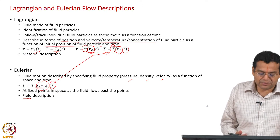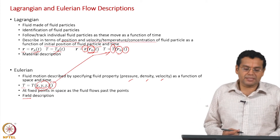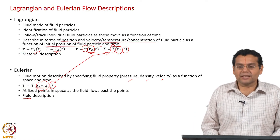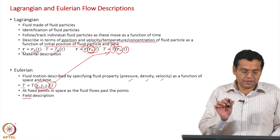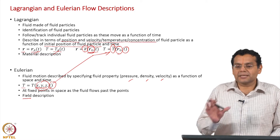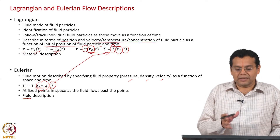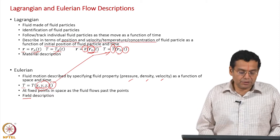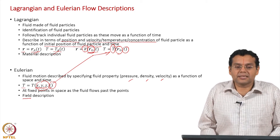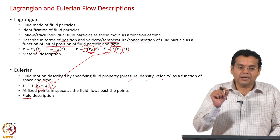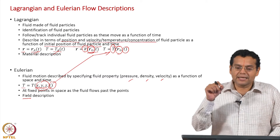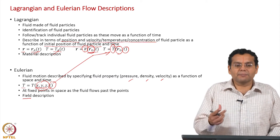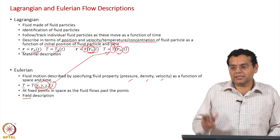When you first encounter the word 'field' it may not make much sense, but as you become used to it, it has a clear physical meaning. The word 'field' simply tells you that there is spatial variation in terms of x, y, z, and possibly time as well. We do not say 'field' for Lagrangian description — we say 'field' only for Eulerian description. The moment I say 'velocity field,' it automatically implies I am talking about Eulerian description.